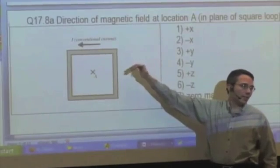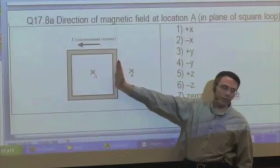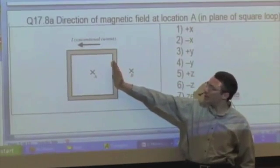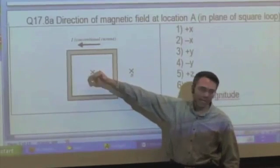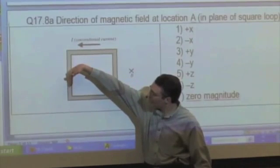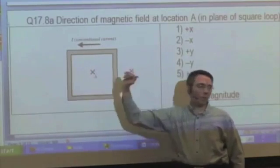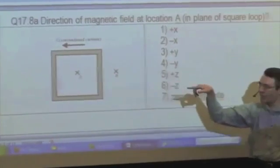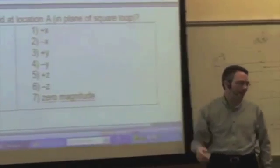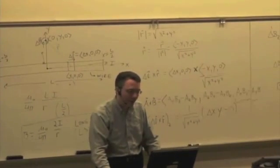And I do it for the top segment, and my thumb points out, and I do it for this segment here where the current is going upward, and I delta L cross R again gives my thumb pointing out, and I do it over here where the current is pointing down, and I delta L cross R my thumb points out. And so no matter which segment I choose, I get the same direction. They're all adding up to give me a net magnetic field pointing out of the screen at that point.